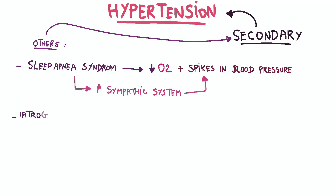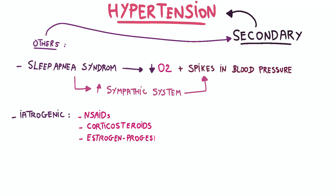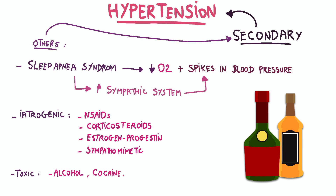Some medications can induce secondary hypertension, such as anti-inflammatory drugs, corticosteroids, estrogen, progestin, and some pathogenic drugs, as well as some toxic causes like alcohol and cocaine.